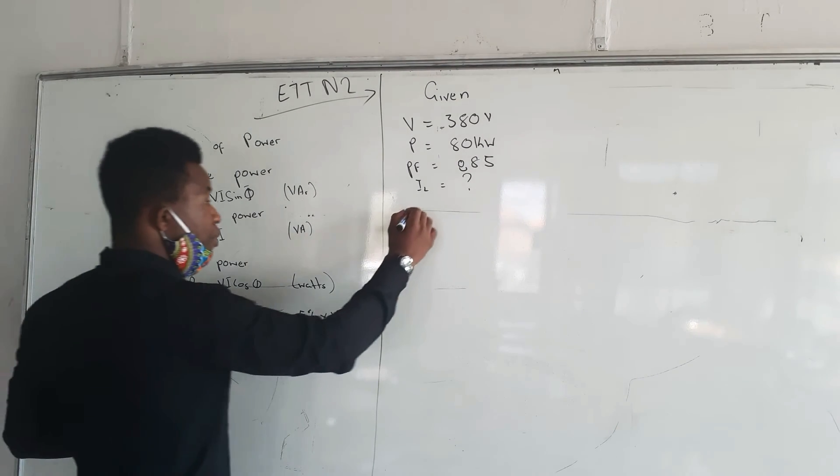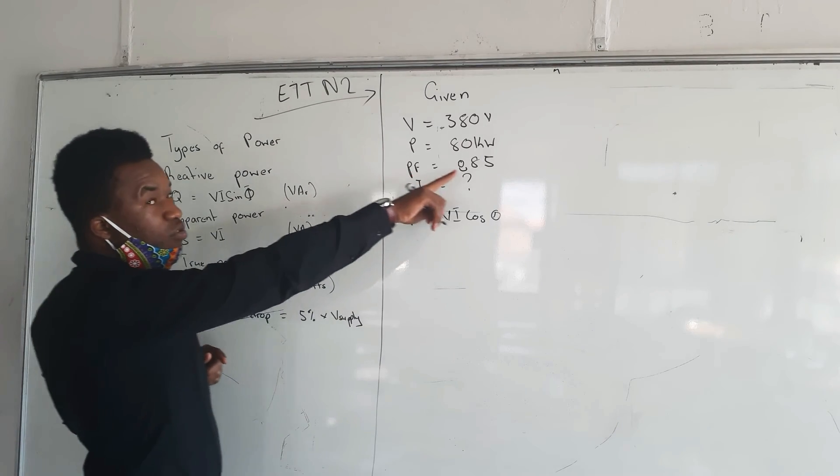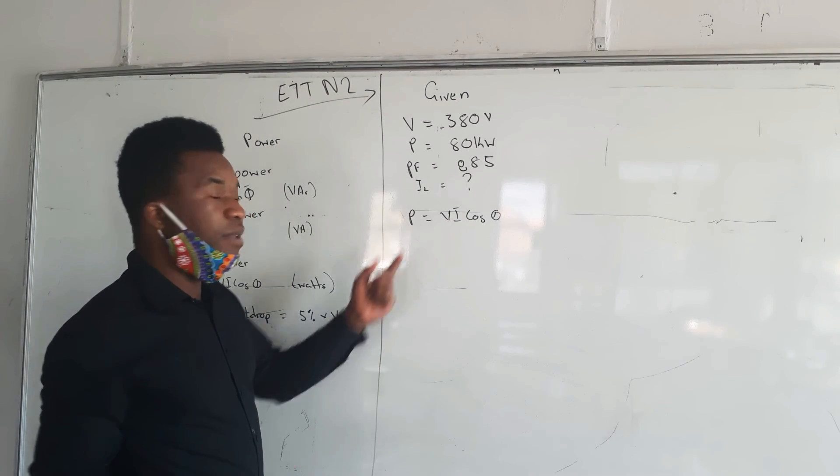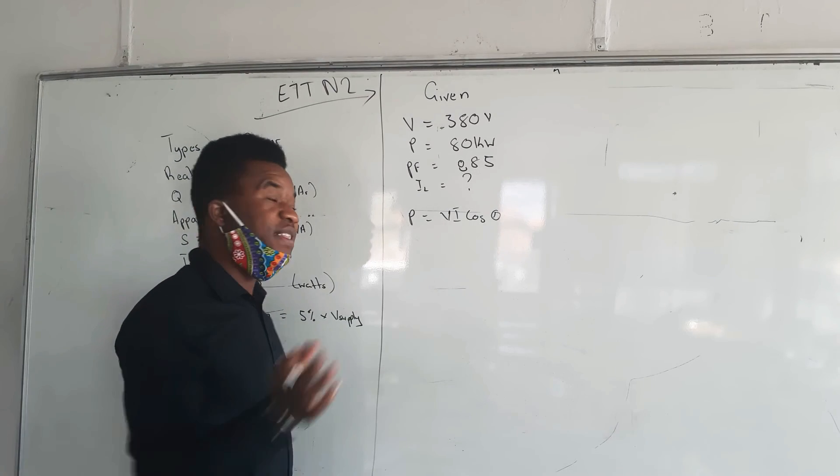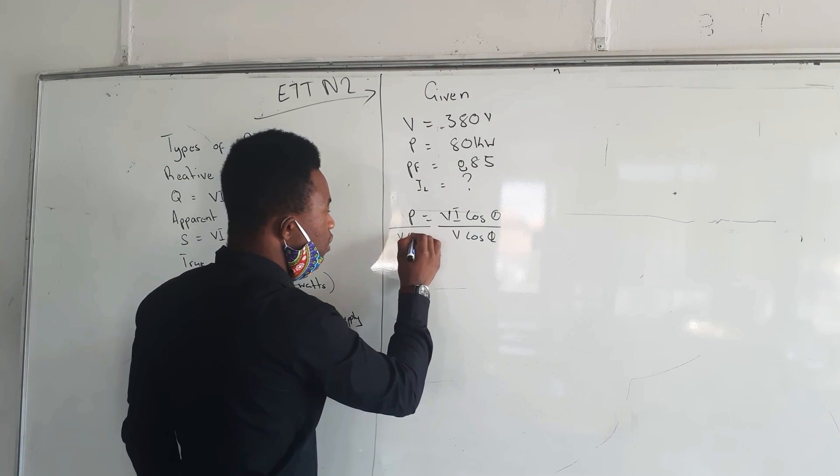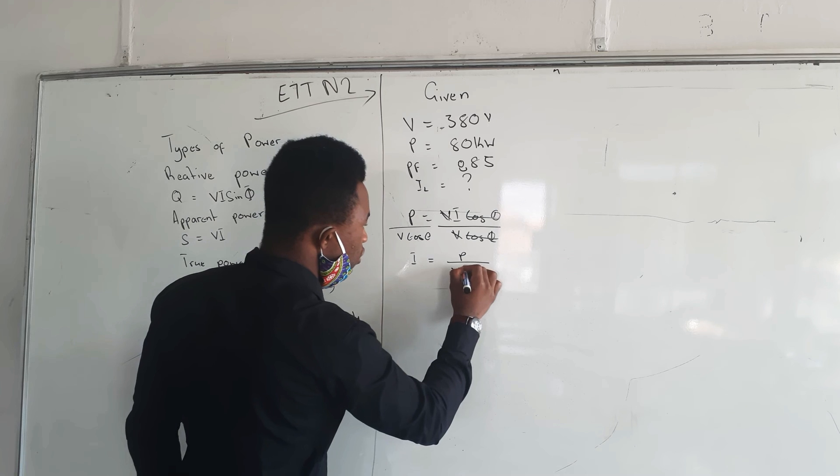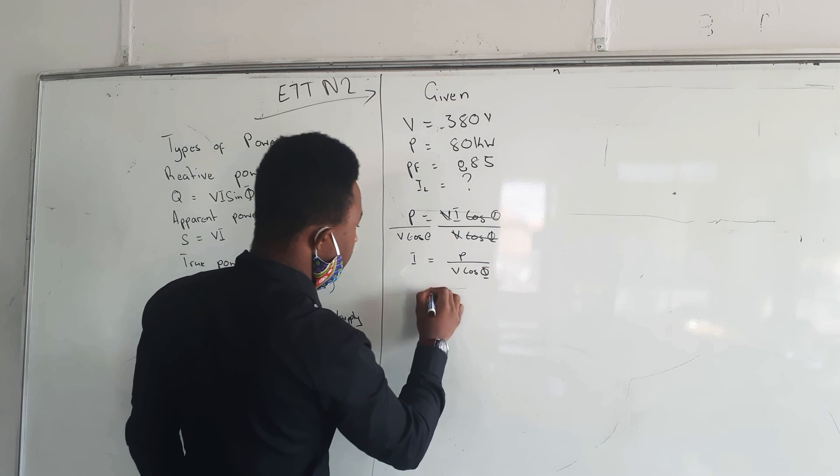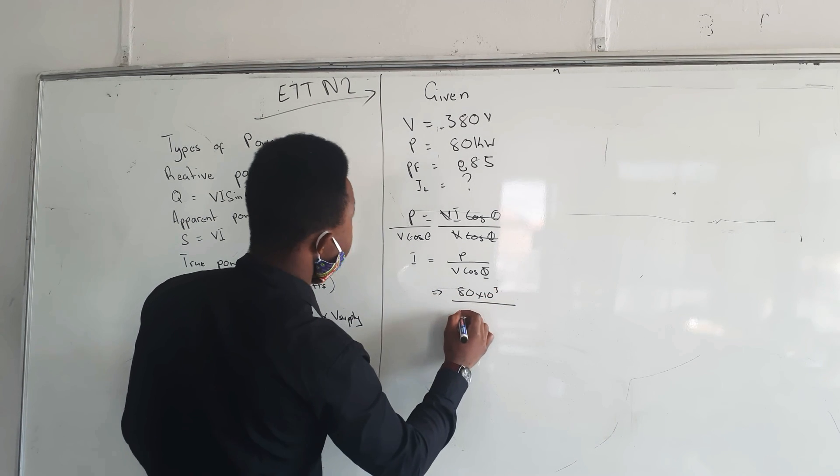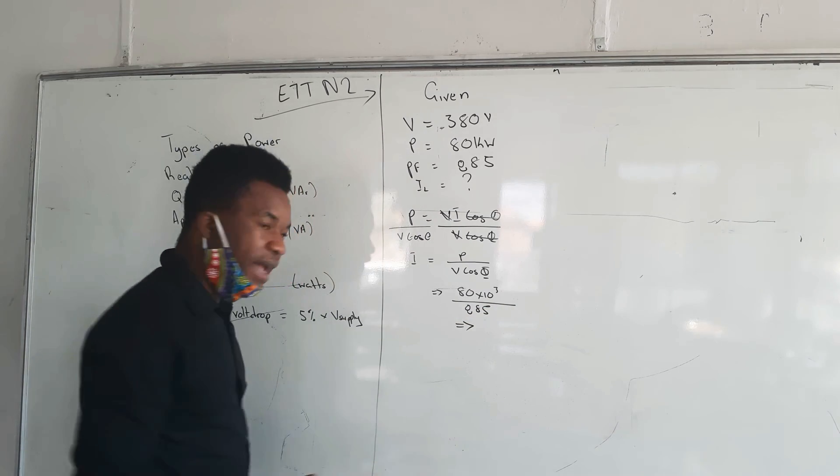The cos theta represents the power factor. I like to make I the subject of the formula first. I'm going to divide by V cos theta, and this will cancel. My current equals P over V cos theta. What is my P? It's 80 times 10 to the power 3 divided by my V, which is 380, multiplied by cos theta, which is 0.885, and then I'm going to get my current.